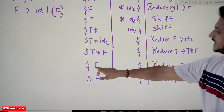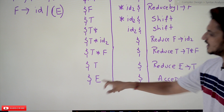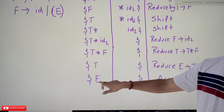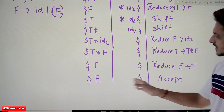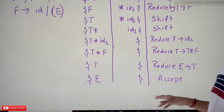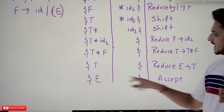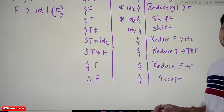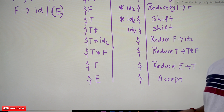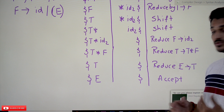Next, T is reduced to E using E → T: pop T from the stack and push E onto the stack. Now when the dollar and E symbols are on the stack — and E is the start symbol — the accepted state is reached. This is what shift-reduce parsing does.